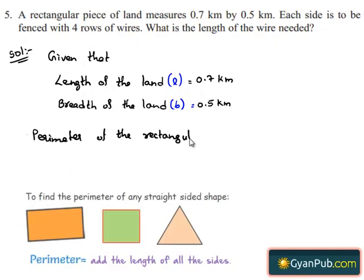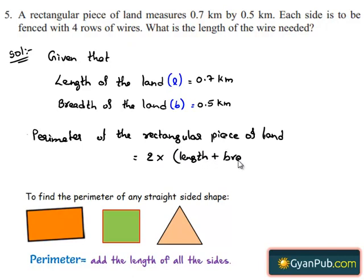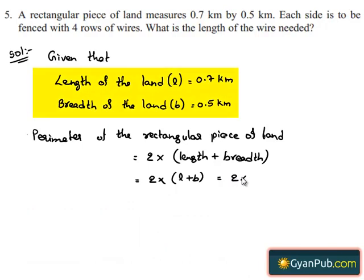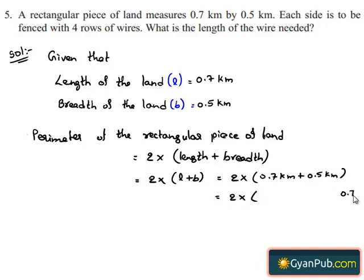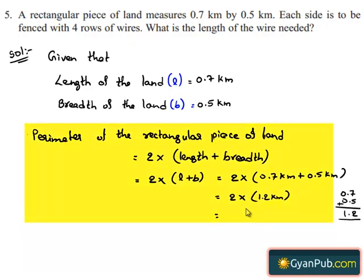The perimeter of the rectangular piece of land is equal to 2 times the sum of length and breadth, since it is in the shape of a rectangle. This is equal to 2 times (L + B) = 2 times (0.7 km + 0.5 km) = 2 times 1.2 km = 2.4 km.